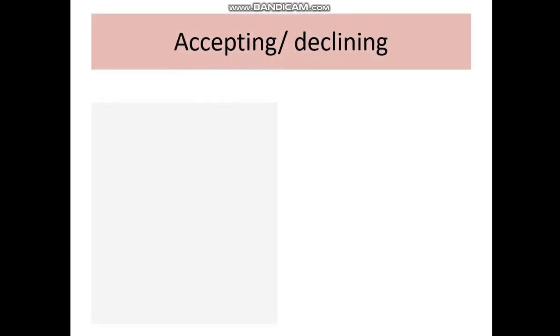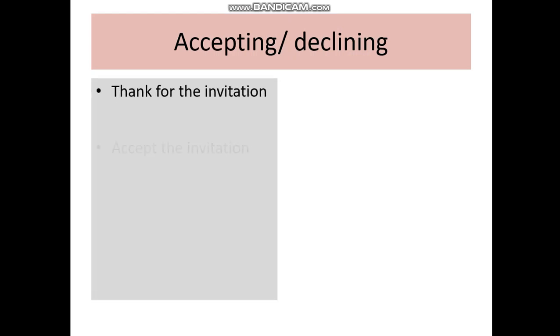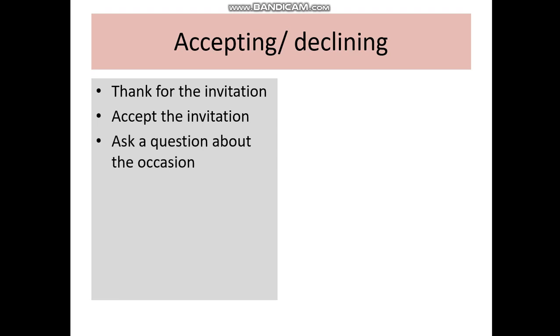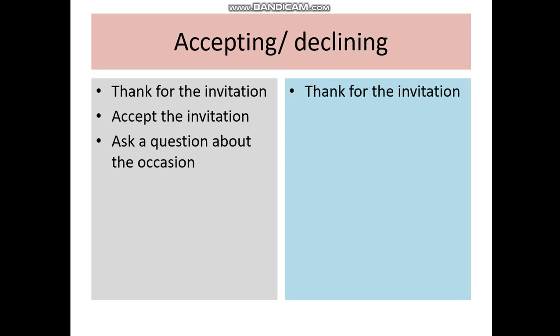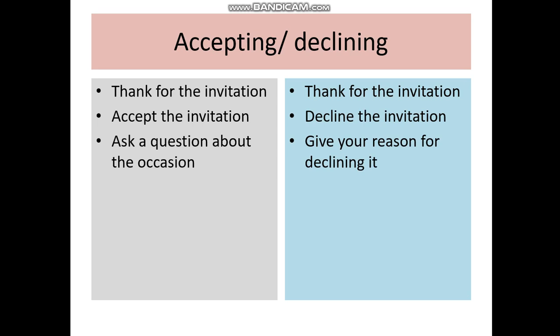In order to reply to your friend's invitation, use the following plan. For accepting the invitation: start with saying thank you, then accept the invitation, and in the end ask a question about the occasion — find out some more information about what you should bring or wear. For declining the invitation: again start with thanking your friend, then say that you can't come and explain the reason, and finish your message with wishes for your friend to have a good time.